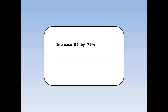Increase 56 by 72%. I want the original 100% plus 72%, which is 172%. 172% as a decimal is 1.72. 56 times 1.72 is 96.32.